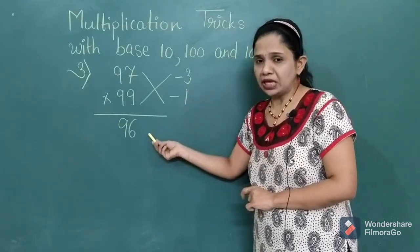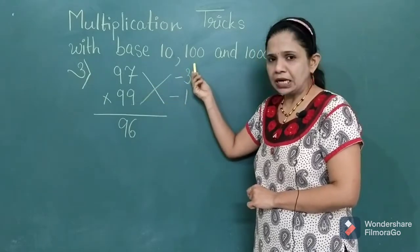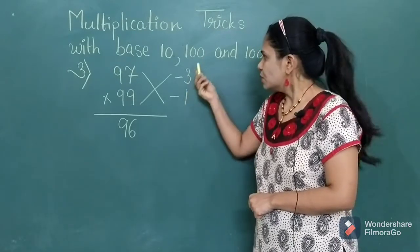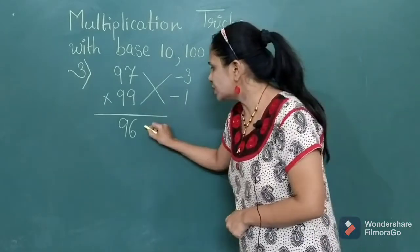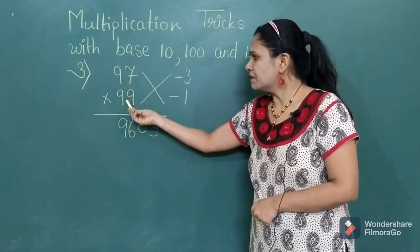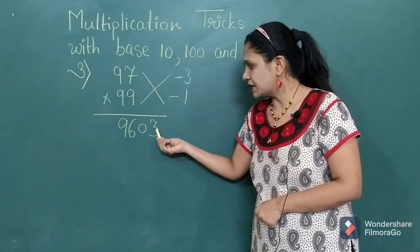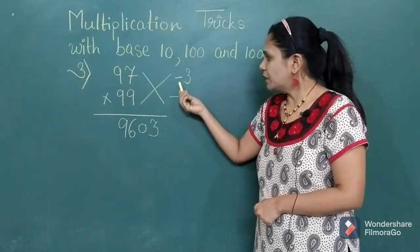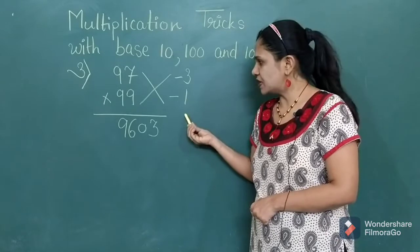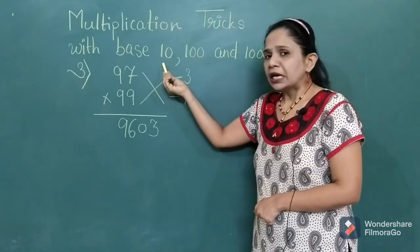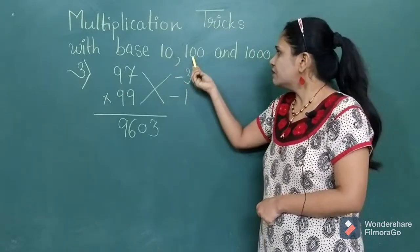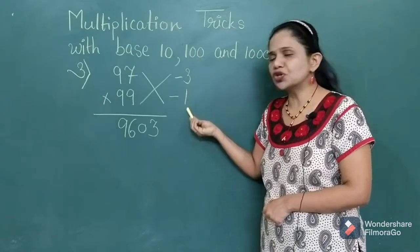But we can't write down only 3. Why? Because the base number is 100 and 100 carries 2 zeros, so we want the product in 2-digit form. To convert 3 into 2-digit form, we just put a 0 in front of 3, making it 03. So the answer for 97 multiplied by 99 is 9603. Please keep in mind: whenever you multiply the newly written numbers, check that the product is in the form matching the base number. If the base carries 2 zeros, the product should be in 2-digit form.